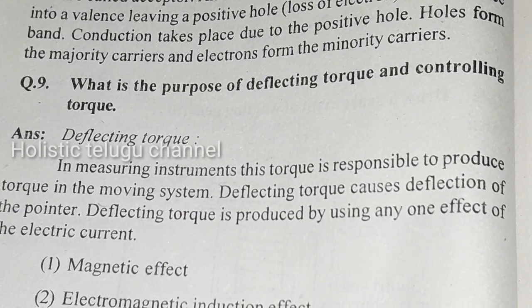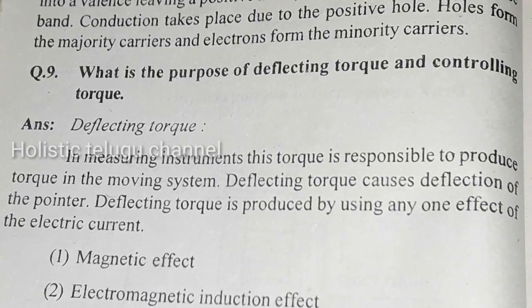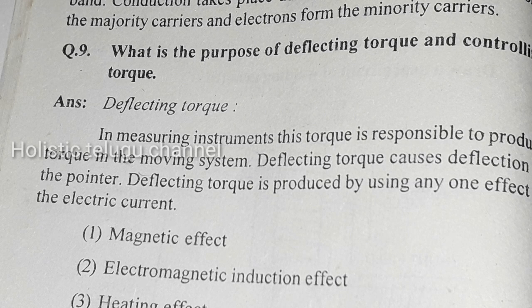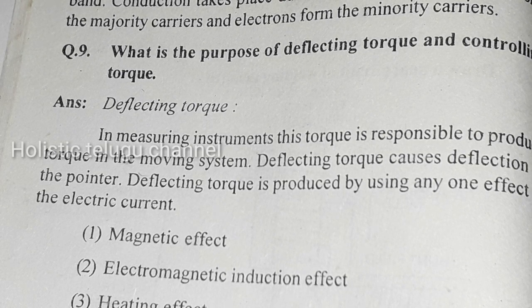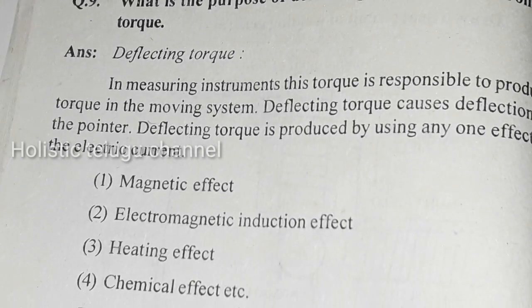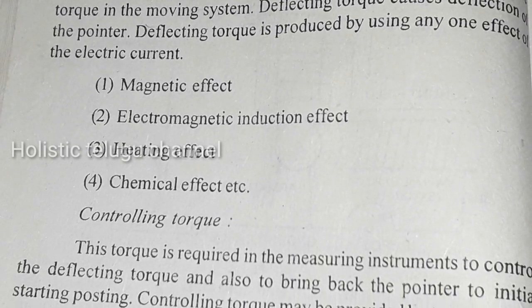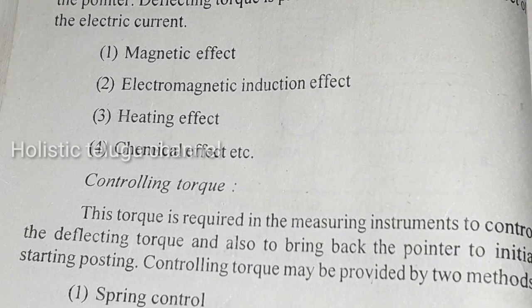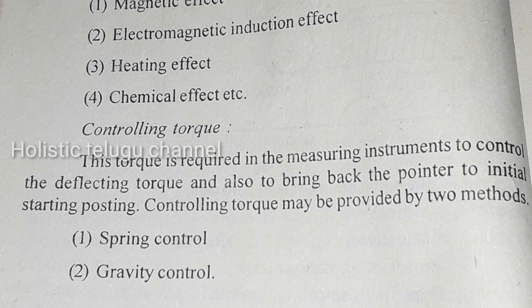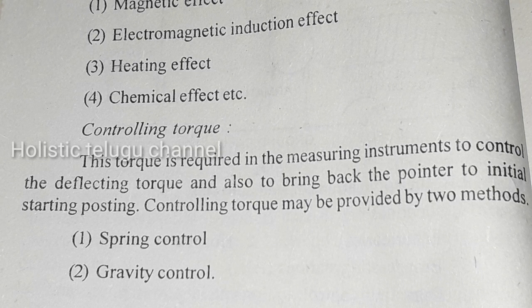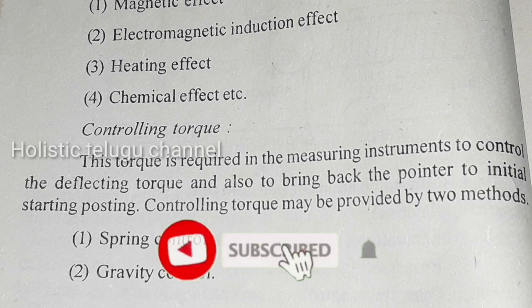Next question: what is the purpose of deflecting torque and controlling torque? Deflecting torque in a measuring instrument is responsible for producing movement in the moving system, causing deflection of the pointer. It is produced using effects such as magnetic, electromagnetic induction, heating, or chemical effects. Controlling torque is required to oppose the deflecting torque and also to return the pointer to its initial position. Controlling torque may be provided by two methods: spring control and gravity control.